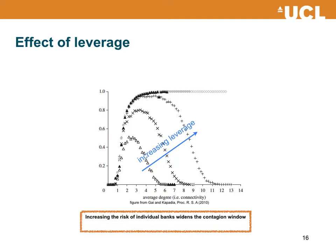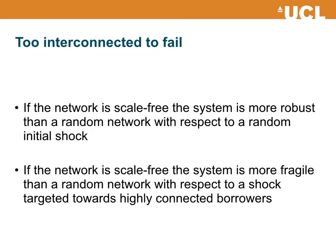Increasing leverage — which means reducing the capital buffer of banks, equivalent to reducing the threshold in the model of Duncan Watts — makes the system overall more unstable, because it increases the probability of observing contagion and it increases the contagion window, which is the intermediate regime for the average degree where the system displays a non-zero probability of observing a global cascade of defaults. It is also possible to generalize these results to the case of scale-free networks and compare the robustness of scale-free versus Erdos-Renyi networks.